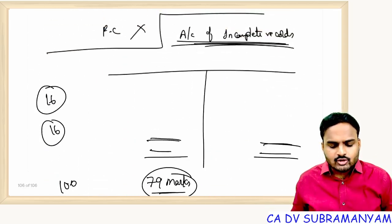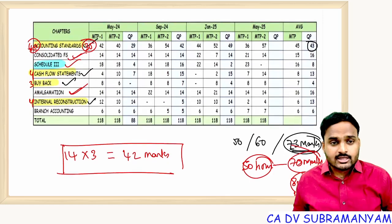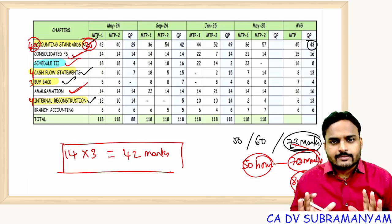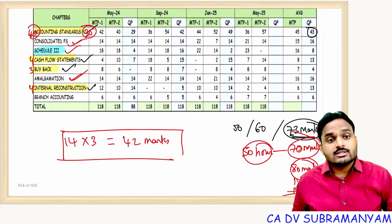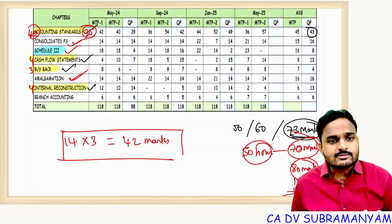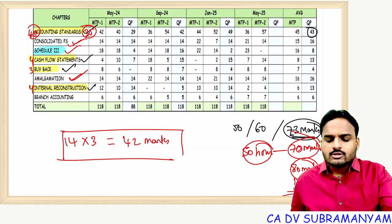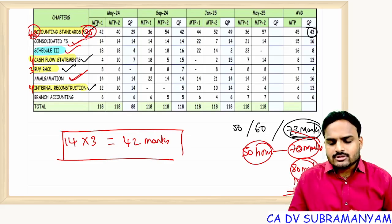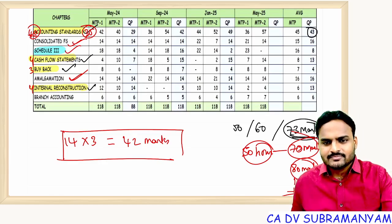So once again: first go with these four topics — accounting standards, cash flow statements, buyback, and internal reconstruction — spend 50 hours effectively and efficiently. Then 70 plus marks are in your hands. Then only start Schedule 3, then amalgamation, then consolidated financial statements, and finally branch accounting. I hope this video will be very helpful to you. Please leave your comments, like the video if you are convinced, and share it with your friends. All the best for your upcoming examinations!